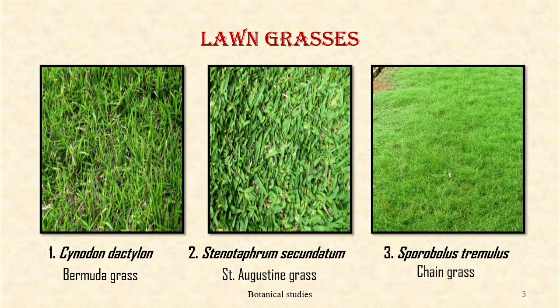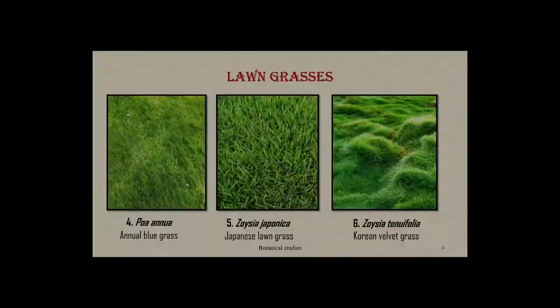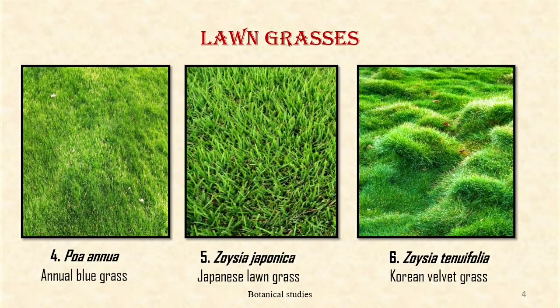Sporobolus tremius, commonly called as chain grass or seashore grass. The texture of this grass is fine and it is suitable for saline soil and open sunny locations.